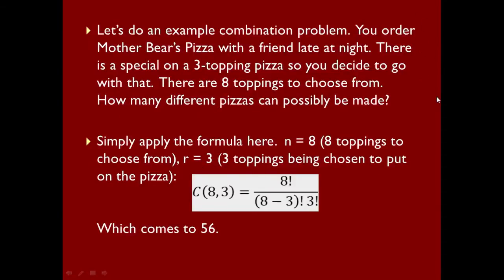Let's dive right into an example. You order Mother's Bear's Pizza with a friend late at night. There's a special on three-topping pizza. There are eight toppings to choose from — how many pizzas can possibly be made? We simply apply the formula: n equals 8 (eight toppings to choose from) and r equals 3 (three toppings chosen). So C(8,3) comes out to 56.